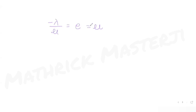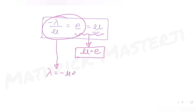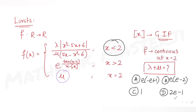Equating all three: −λ/μ = e = μ. From the right-hand limit equalling f(2): μ = e. Substituting into the left-hand limit equation: −λ/e = e, so λ = −e². Therefore λ + μ = −e² + e = e(−e + 1), which matches option (a).